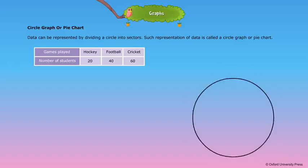We can draw a pie chart to represent the number of children playing different games in a school. Data in the table can be represented using a circular graph. Here the whole circle represents the total number of children, that is 120.